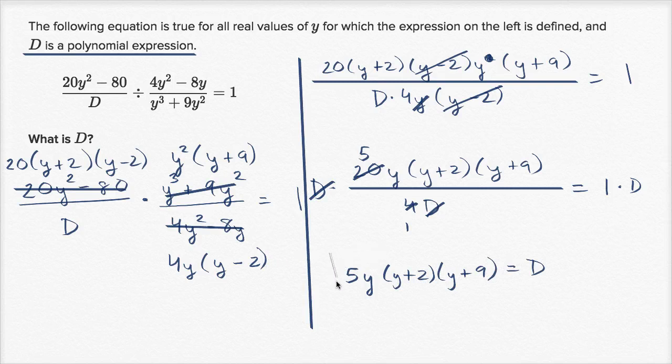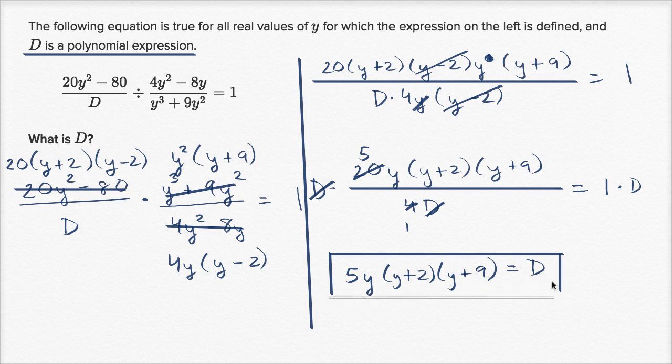This is d, this is the polynomial, that is the polynomial expression that we are looking for. If you were to substitute this back in, and then try to simplify it, well, you would end up with all of this over here, and d would be this, and so it would all just cancel out, and you would be left with 1. For all real values y, for which the expression on the left is actually defined.